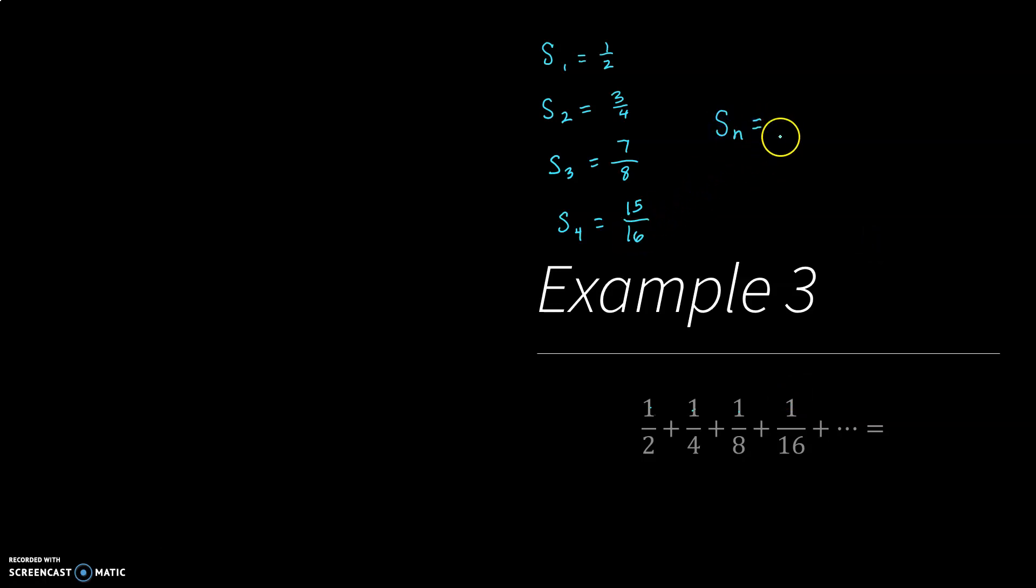So now if I look at the nth term, well, that looks like the denominator is 2 to the n, and the numerator is 2 to the n minus 1. So very similar to the last example. So it looks like as n goes to infinity, our partial sums are going to go to 1, because 2 to the n divided by 2 to the n would be 1. So this series converges to 1 because our partial sums converge to 1.